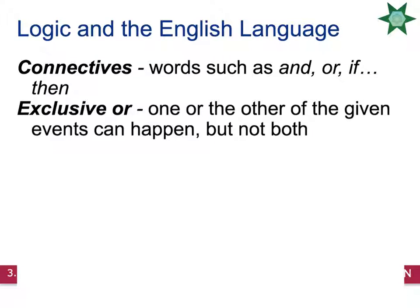Exclusive or: in an exclusive or, you're bringing two thoughts together with the word or between them. When you talk about something being an exclusive or, you want one or the other, but you don't want both of them to occur. For example, I want to wear a red or a blue shirt — if you don't want to wear both simultaneously, that would be an exclusive or.